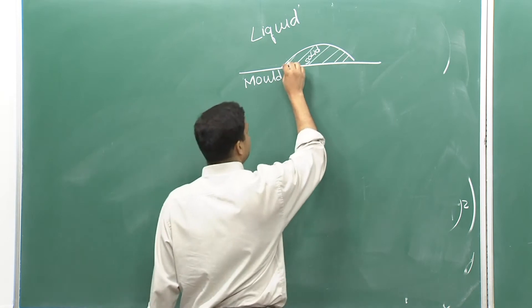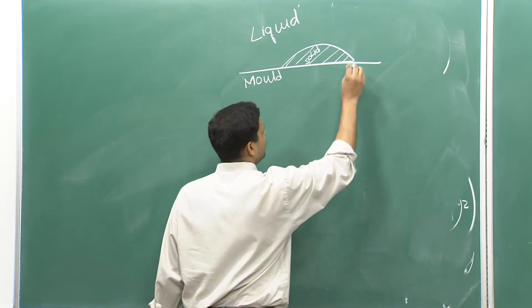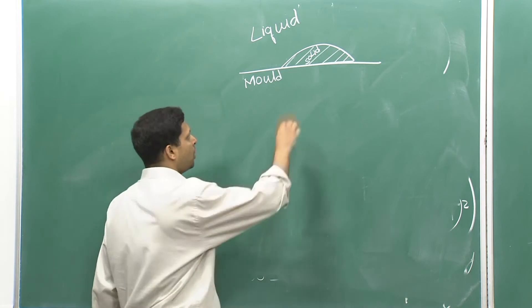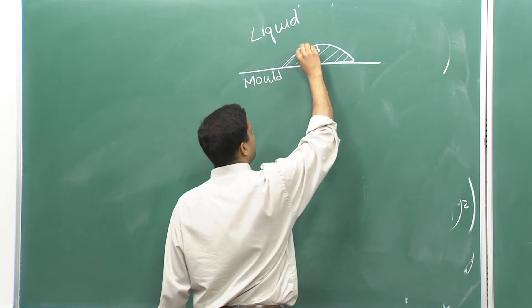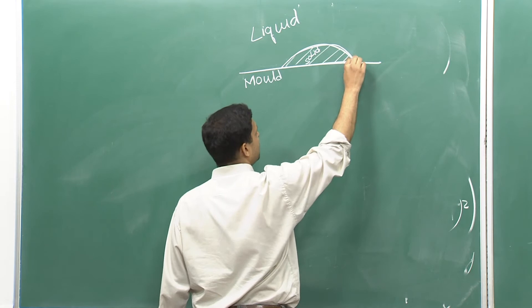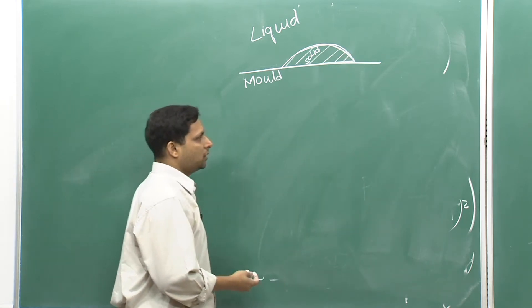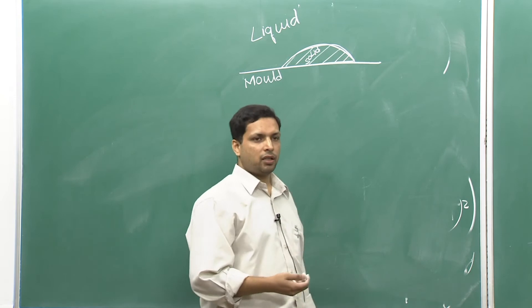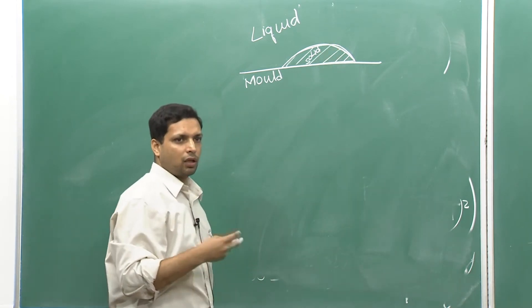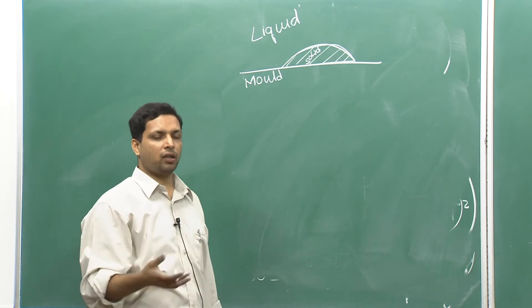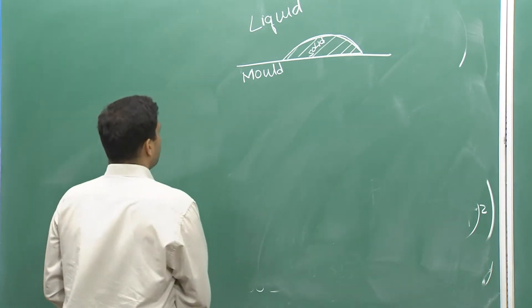The surface energy that existed earlier between liquid and mold has now been replaced in effect by new surface energy terms. So when we look at the surface energy terms, we are only looking at the difference in energy of the newly formed surface and what has been taken away.